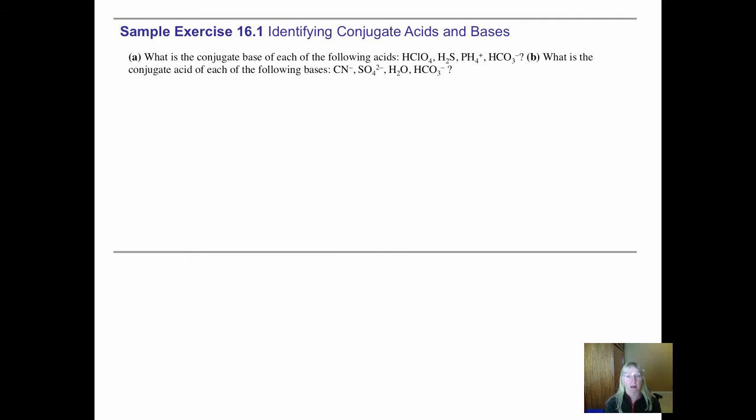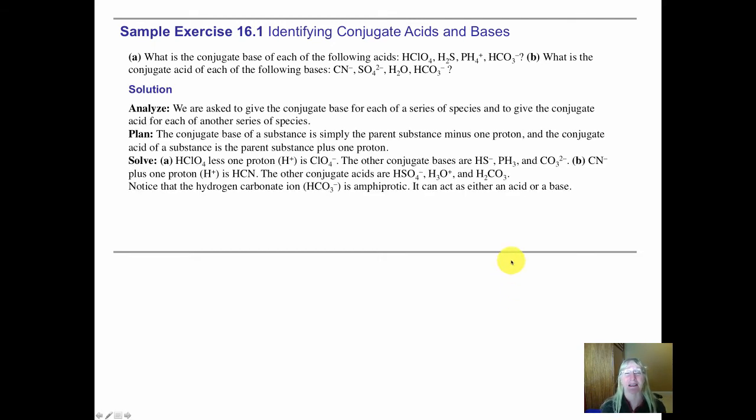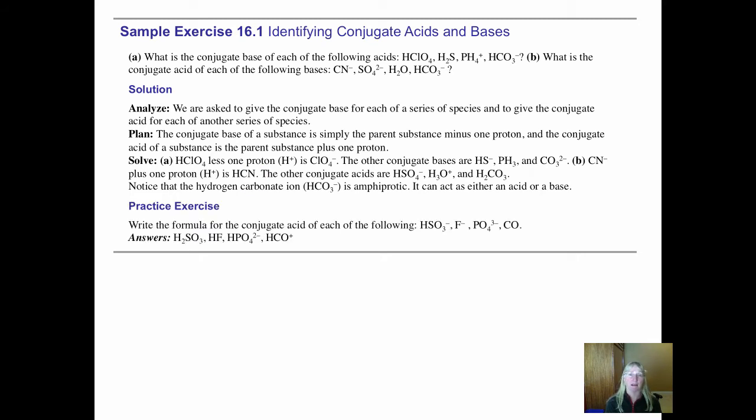To understand how to find the conjugate base of these acids and the conjugate acids of these bases is really simple. Anything that is an acid will give away a hydrogen ion. So when HClO4 gives away a hydrogen, all that's left is the ClO4 1- ion. When the base cyanide accepts a hydrogen, it becomes hydrocyanic acid. It's very easy. I'll let you puzzle out the rest of Problem 16.1 to identify the conjugate acid of a base and the conjugate base of an acid, even if they're ions.